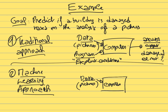In our building damage example, instead of explicitly teaching the computer how to detect damage, we want the computer to learn on its own. Rather than providing a program with explicit rules, we provide the output directly — we tell the computer: is this picture of a damaged building or not?